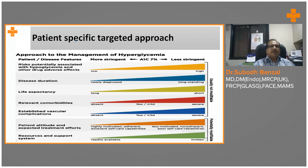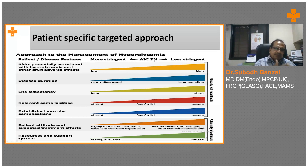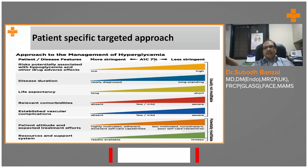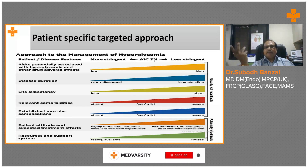We have given this a patient-specific target approach. This is the approach of management of hyperglycemia where you have the disease. We have the HbA1c target of 7. So you want to keep it below 7, or you can relax up to 7.5 or 8.